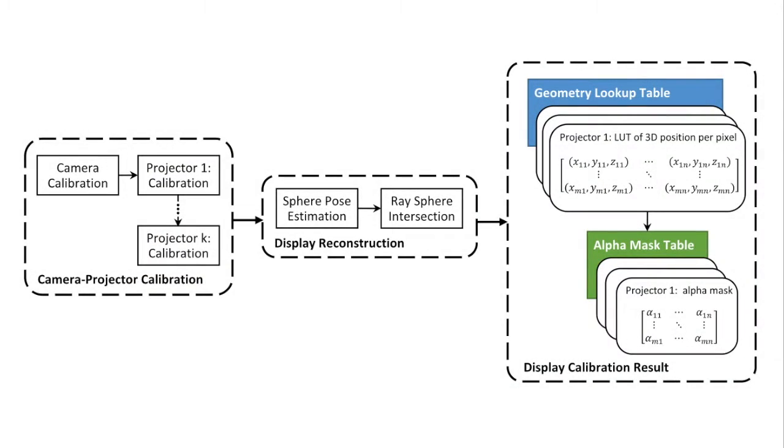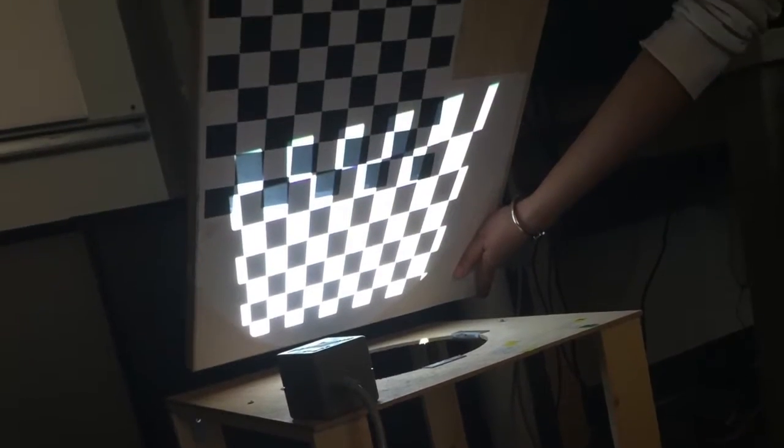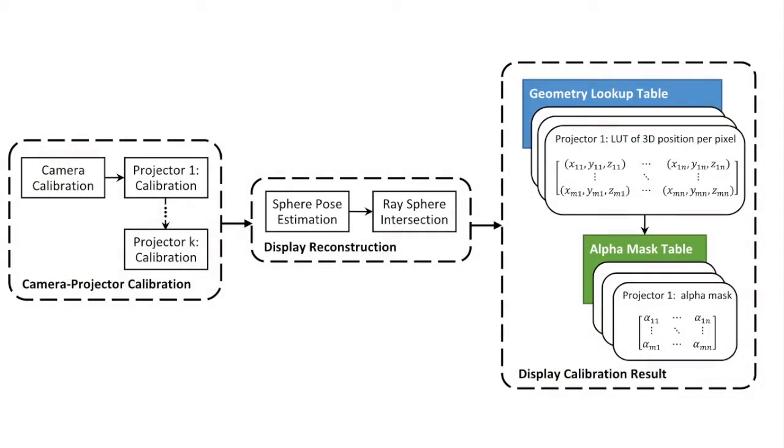We calibrate the display system using two steps. First, we calibrate the camera projector system using a physical pattern and a projected pattern on board. Then we reconstruct the spherical screen by projecting blob patterns onto the sphere. This provides us the sphere pose parameters.